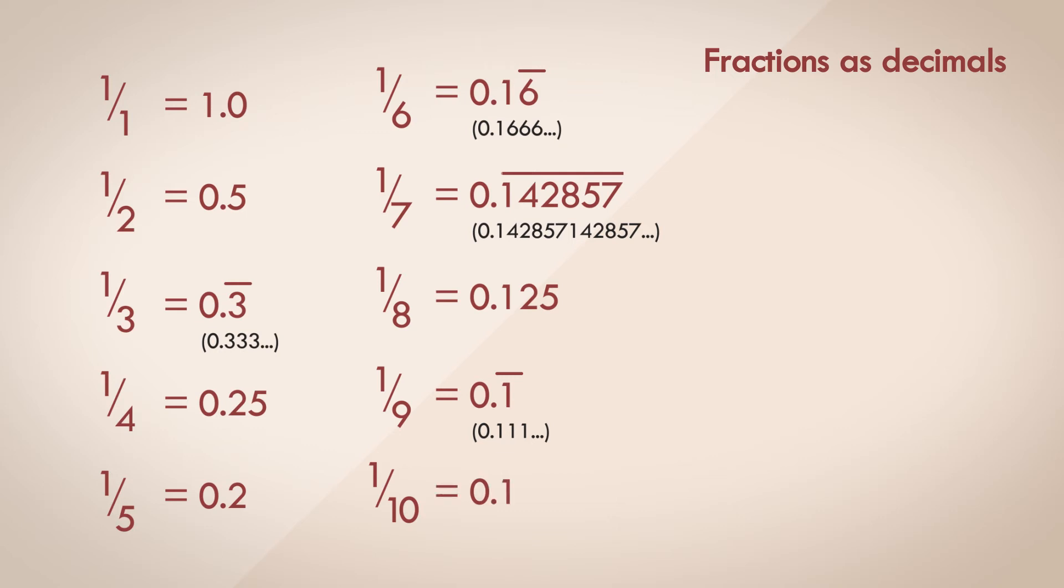So clearly, some of these fractions can be represented exactly in their decimal form, but a lot of them can't. They are recurring numbers, and they have to be approximated. How do we find out if a fraction results in a recurring decimal or not?